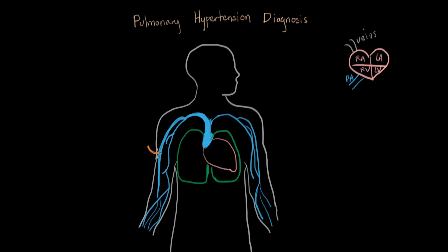Then under imaging, we can advance this catheter along our venous tree. It goes along the bigger and bigger veins, and finally comes to the superior vena cava.